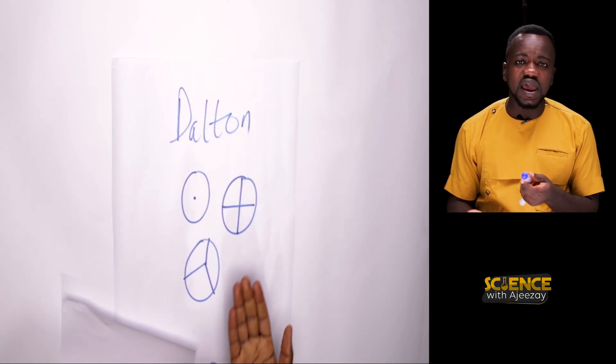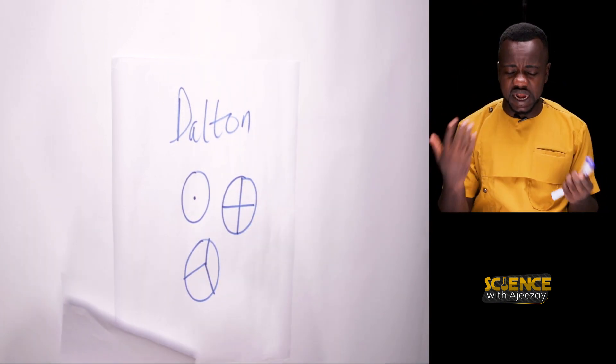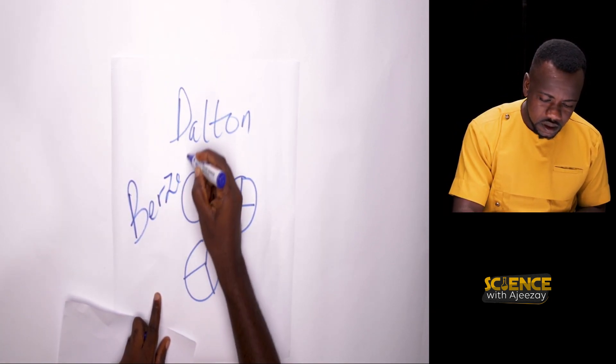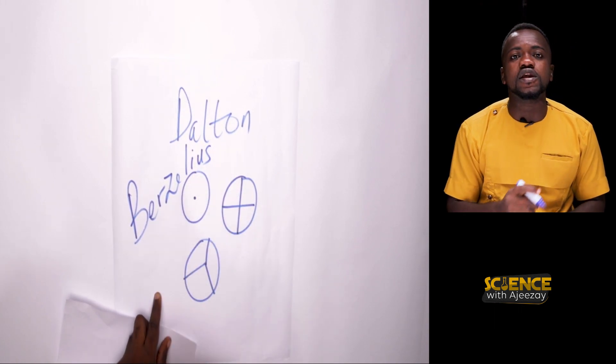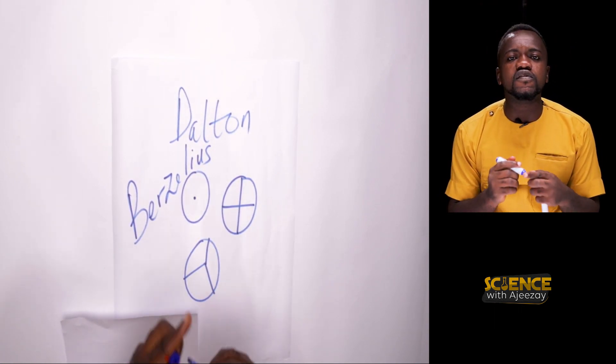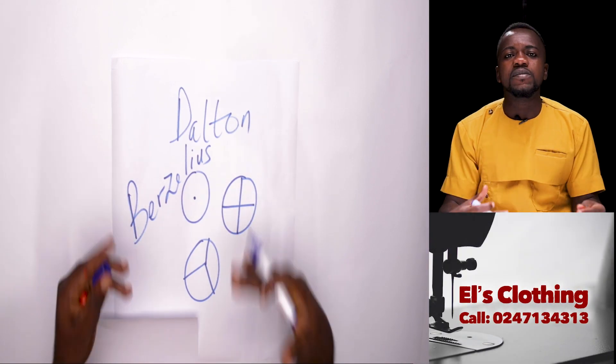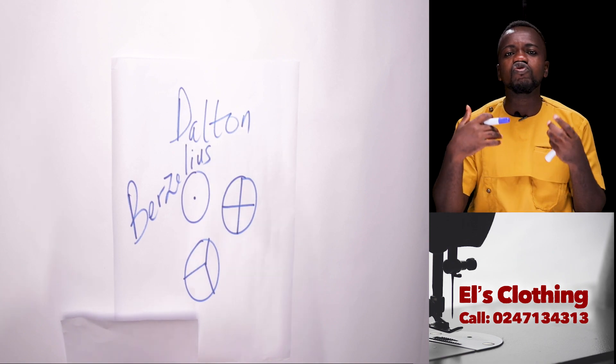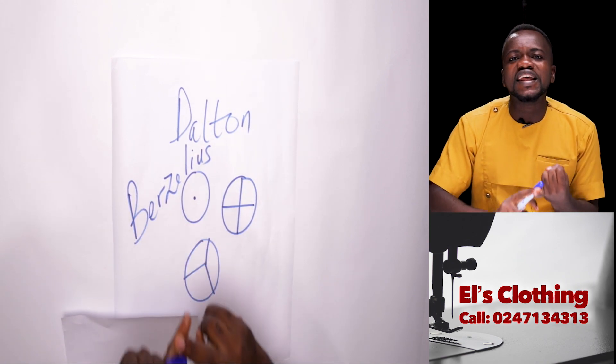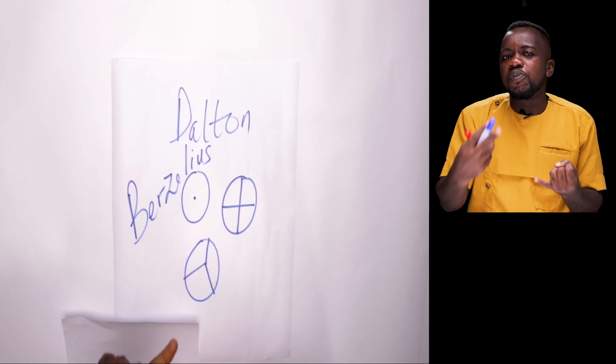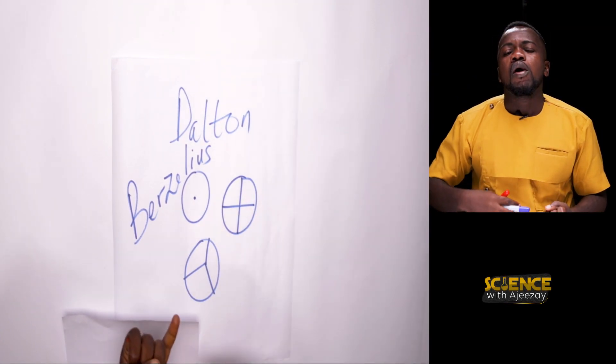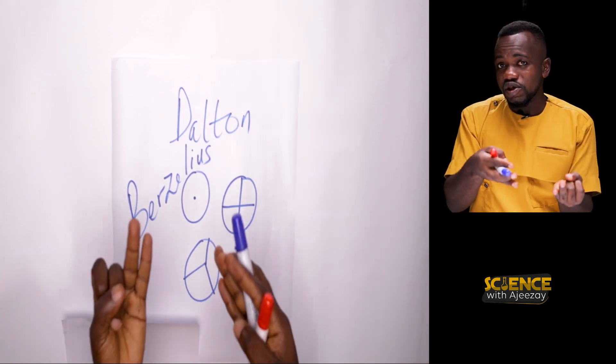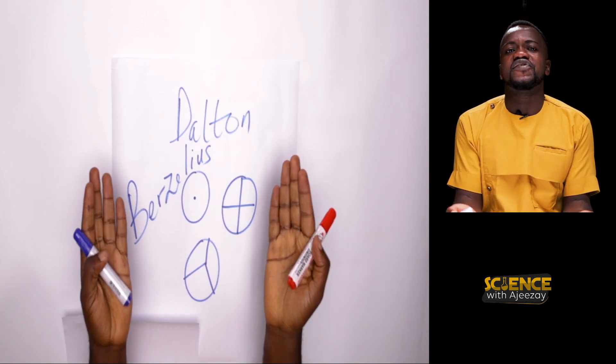And then another scientist brought another means of naming the element and it's called Berzelius. And then Berzelius' system of naming is what we use now. And he decided to use the first letter in the name of the element to represent its symbol, or the first two letters in the name.